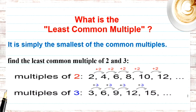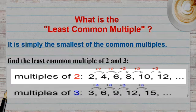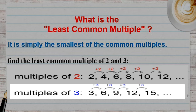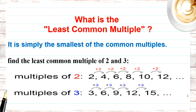Here is another example: find the least common multiple of 2 and 3. Multiples of 2: 2, 4, 6, 8, 10, 12. Multiples of 3: 3, 6, 9, 12, 15. The least common multiple is 12 — I can see 12 in the multiples of 2 and in the multiples of 3.